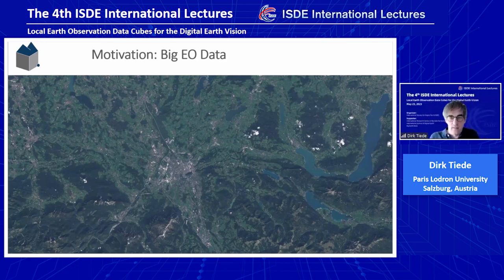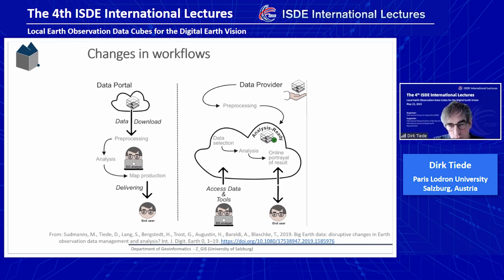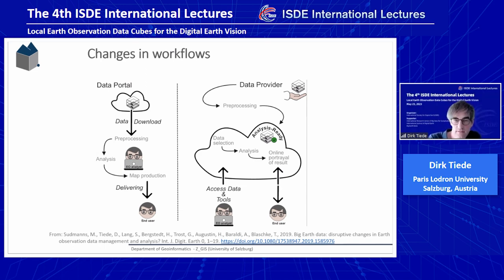There is a big change in workflows now. A few years ago, typical processing would be: you download data, you do an analysis, and you deliver it to the end user. That has completely shifted. Craig also showed how much data we have per day — Sentinel-2 observes at least every five days at the equator and even more frequently towards the poles. We have Landsat data, Sentinel-1, Sentinel-3, and so on. It's not possible anymore to do these old workflows if you want to make use of all available data for time series analysis.